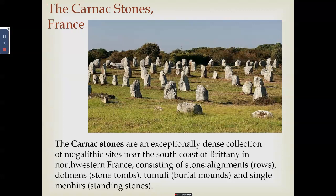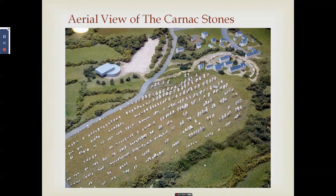The Carnac Stones in France form a dense collection of megalithic sites consisting of stone alignments, dolmens, mural mounds, and single menhirs or standing stones. The aerial view shows a very large number of stones arranged in alignments. This is considered a ceremonial and religious site.